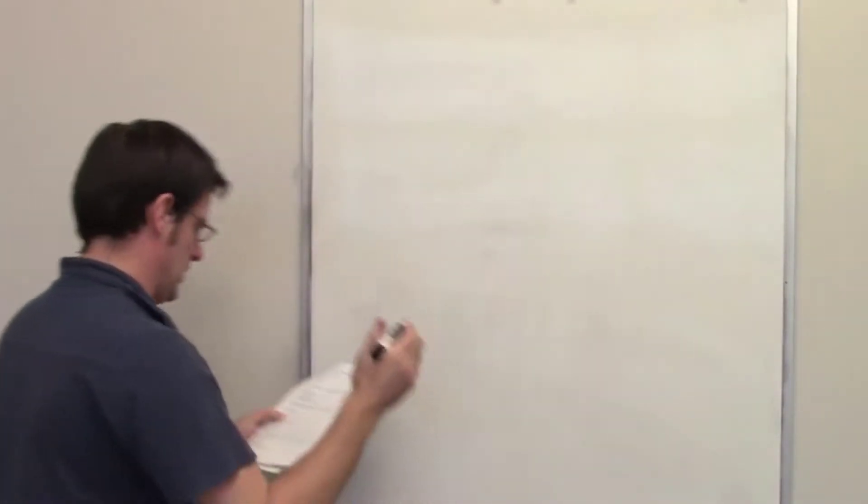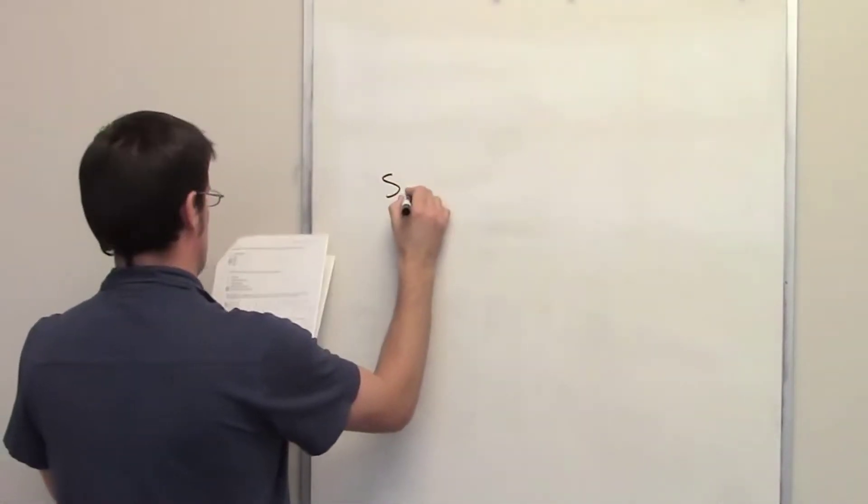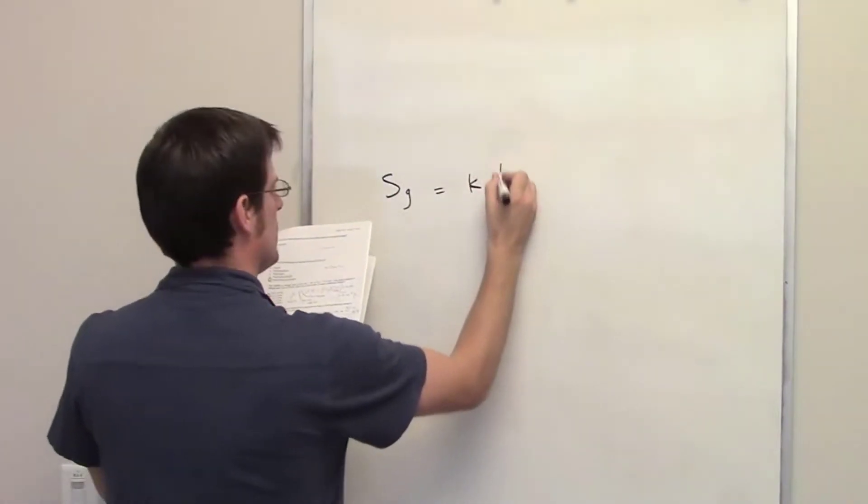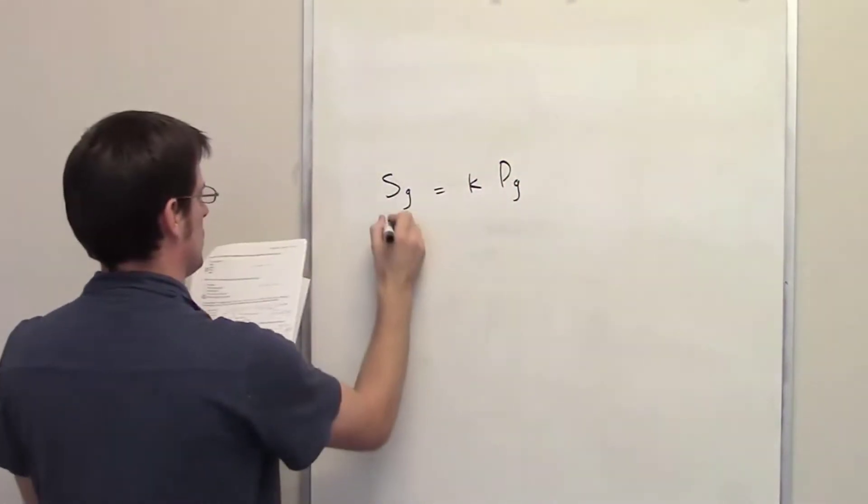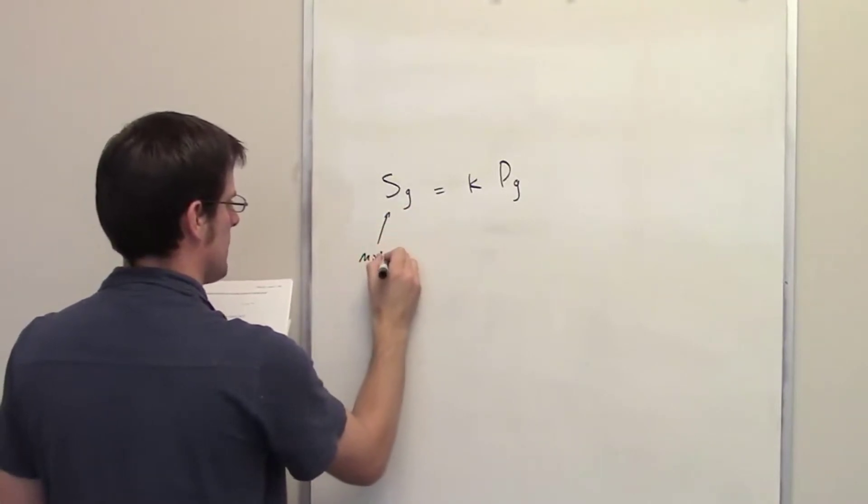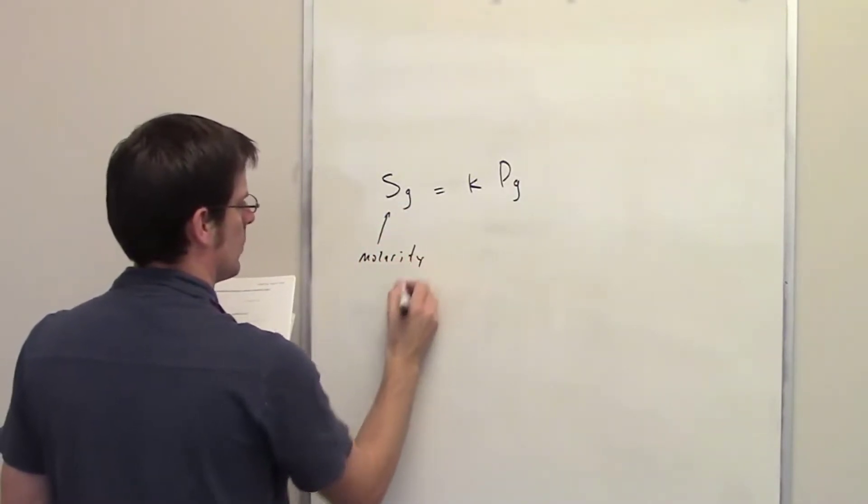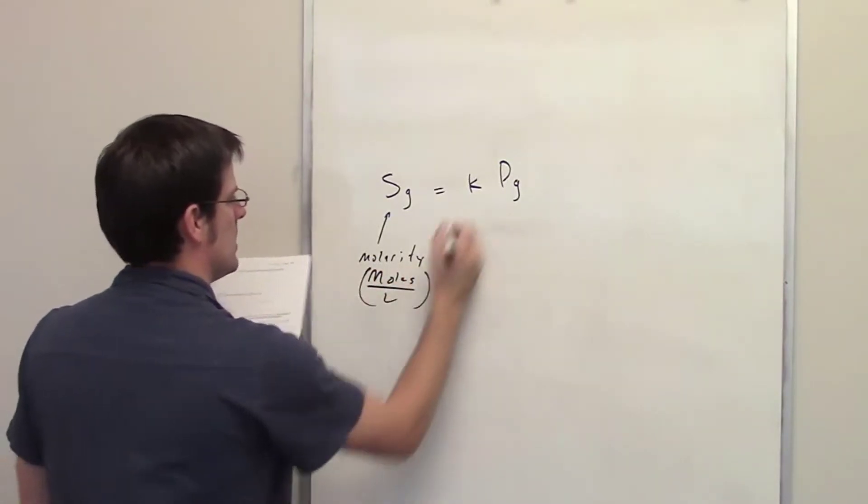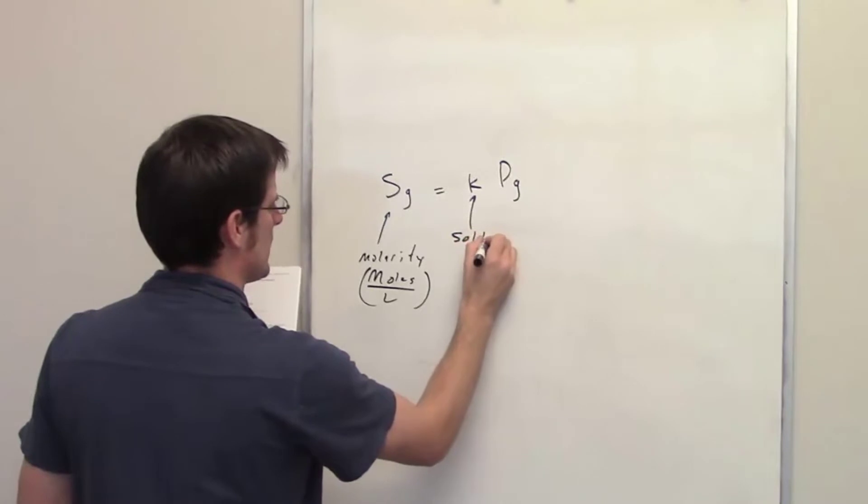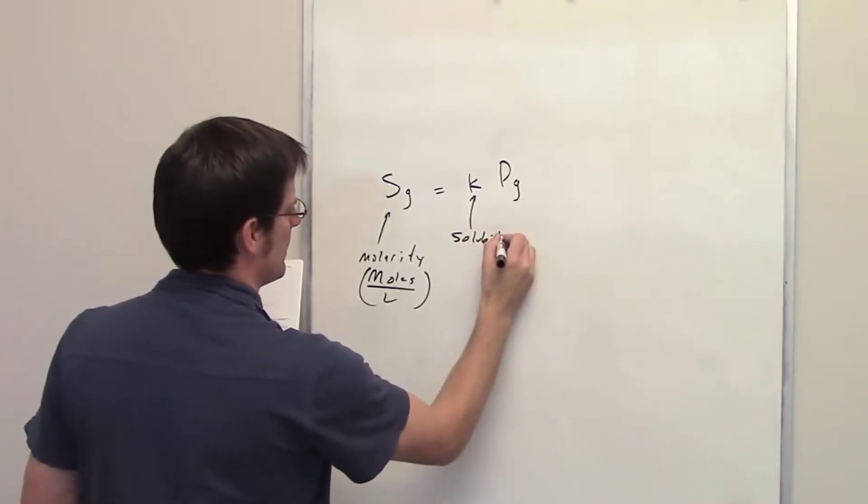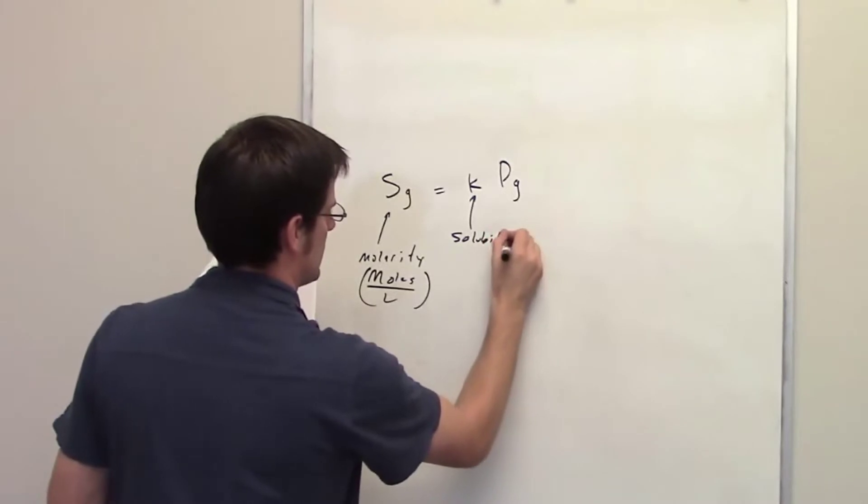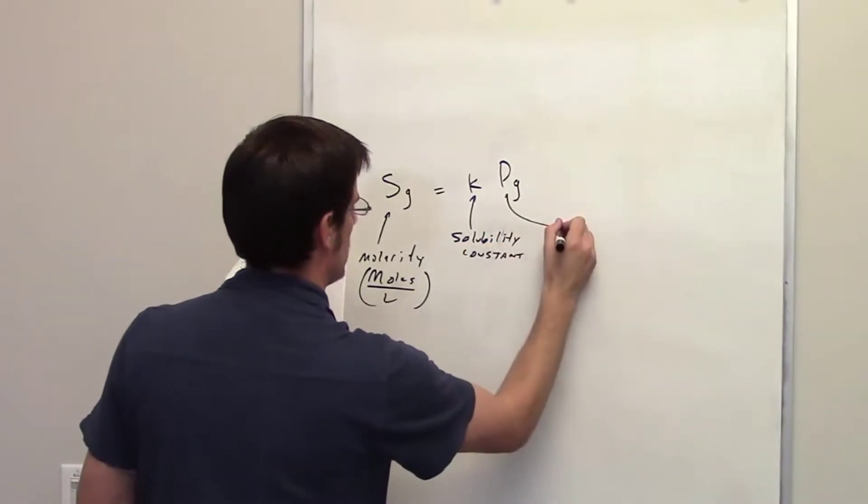This problem will involve using the equation I just gave you, which is molarity is equal to solubility times partial pressure. So this is molarity, which is of course units of moles per liter. This is solubility, this is kind of confusing, this solubility constant, this is partial pressure.